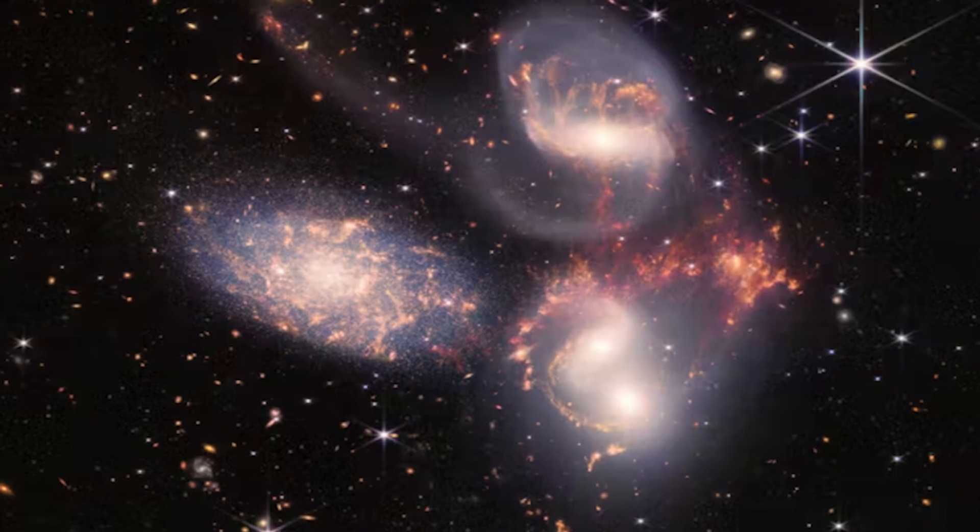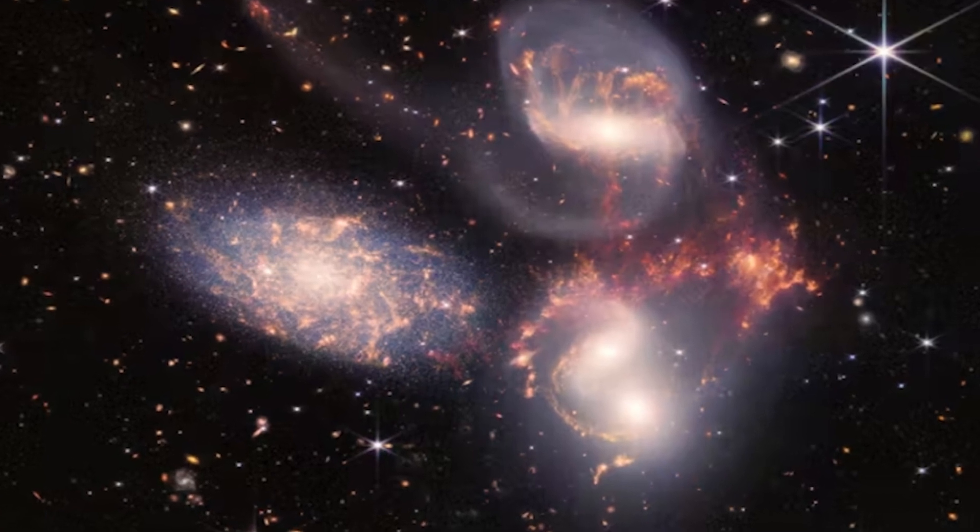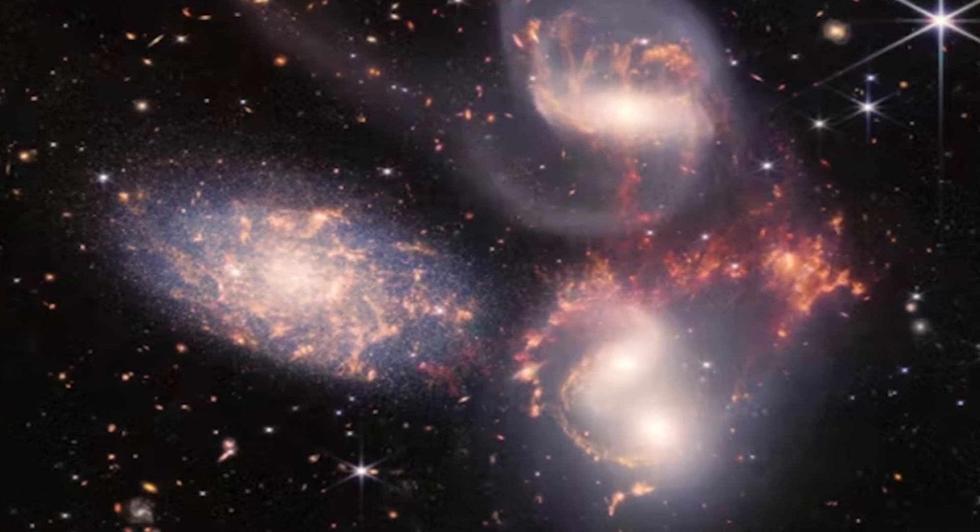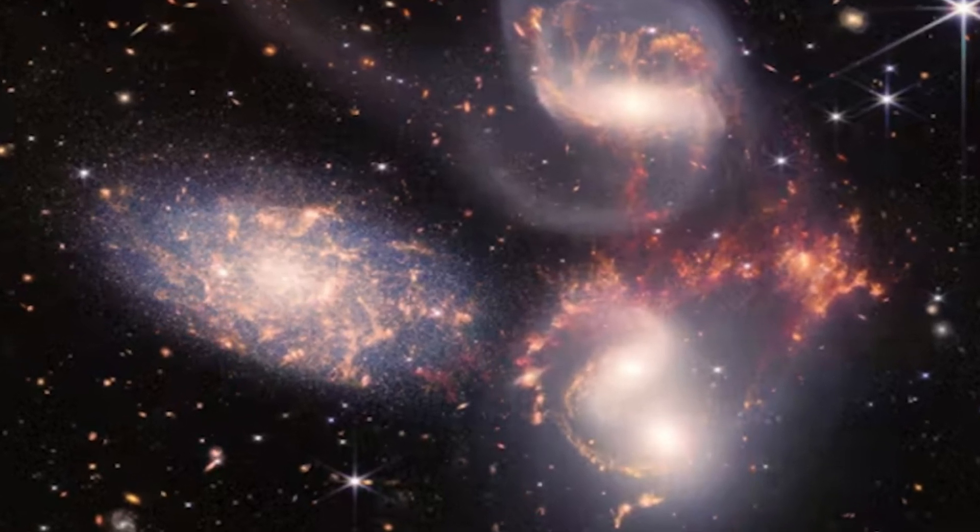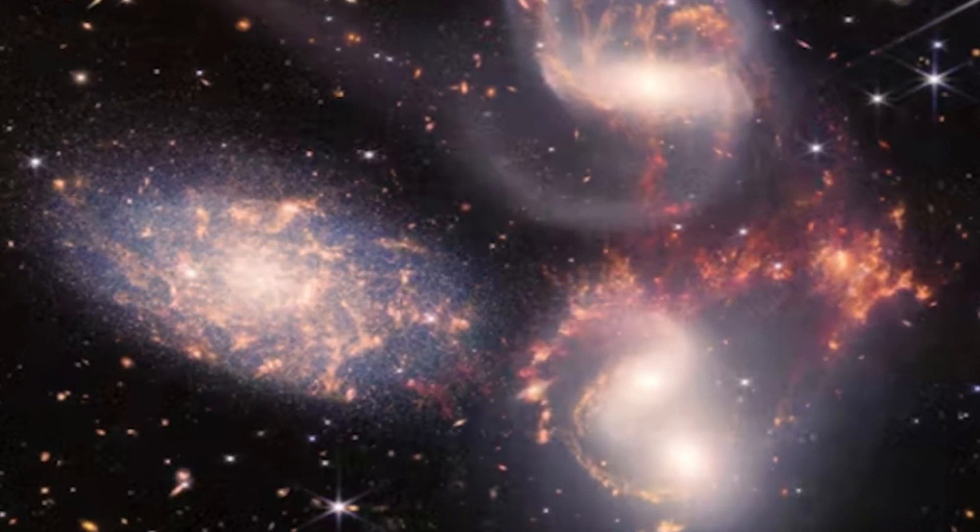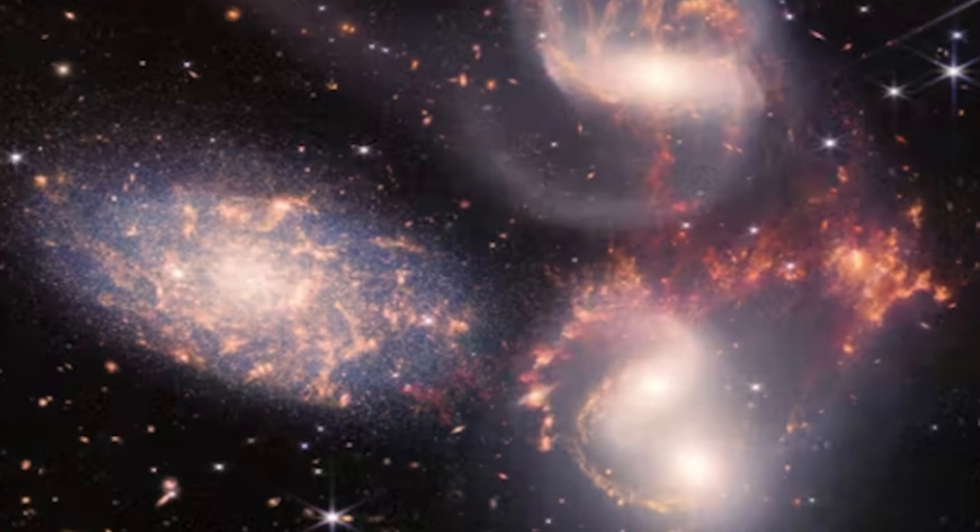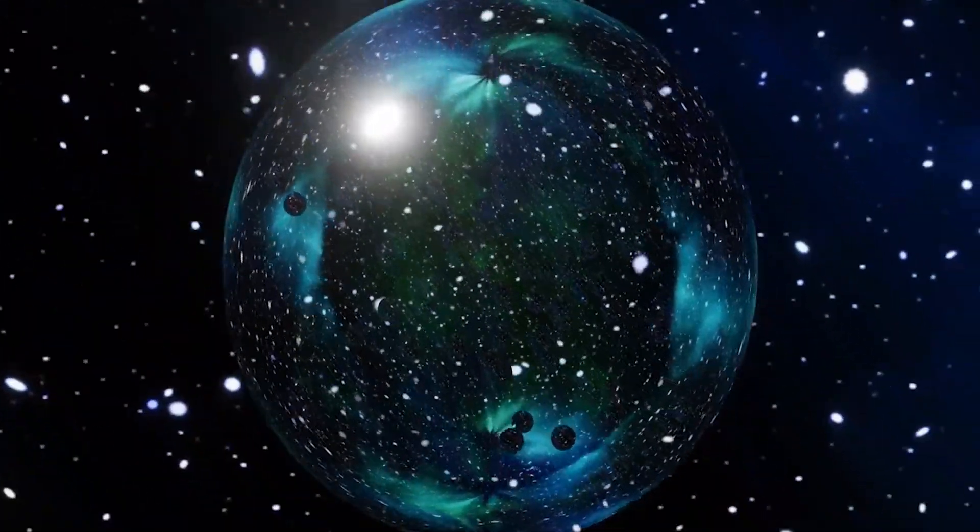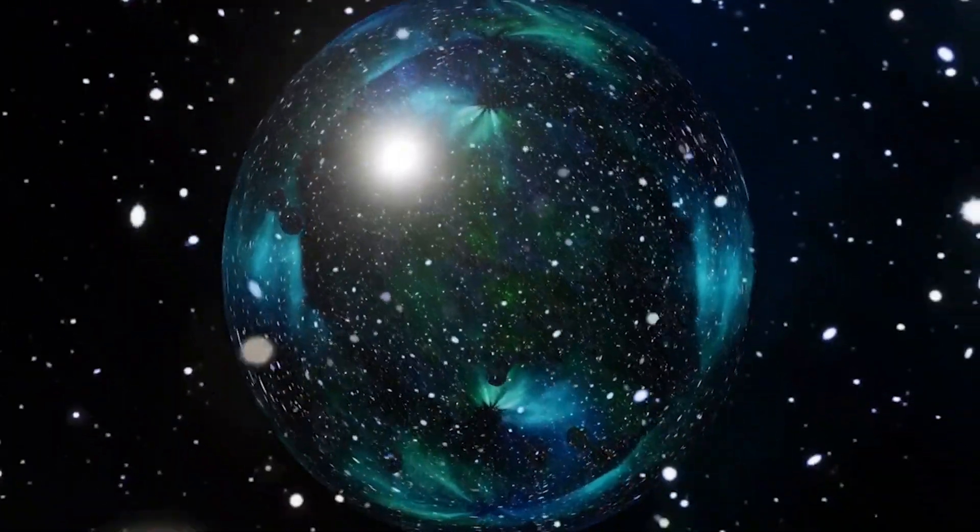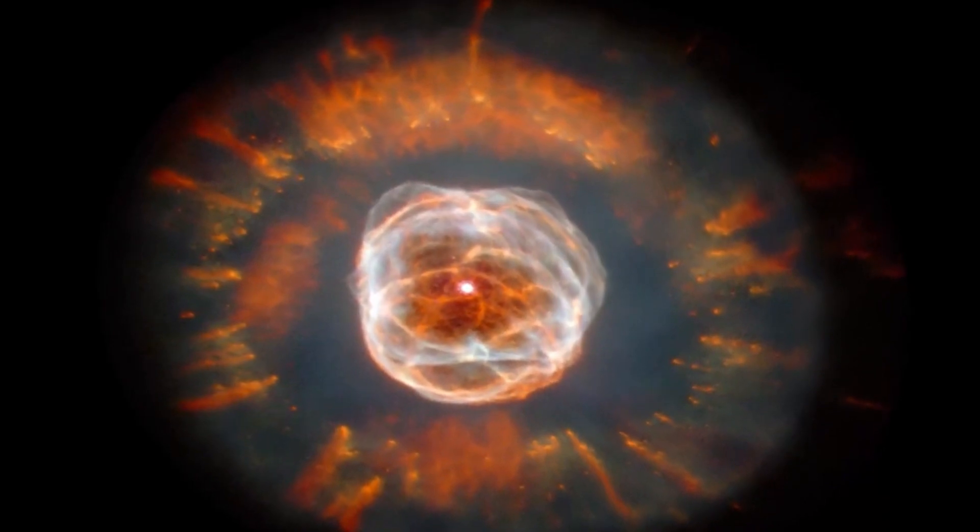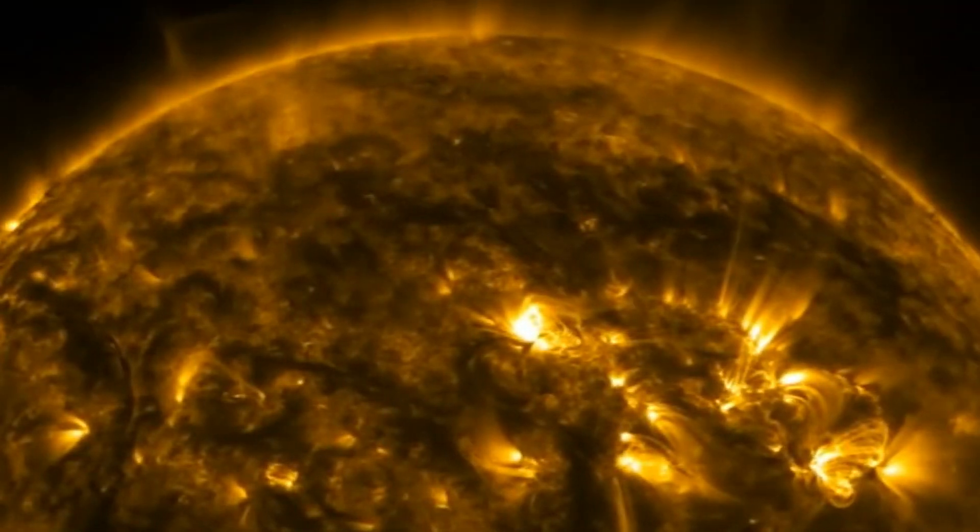Next image by Webb is Stephan's Quintet. It is a cluster of five galaxies located 290 million light-years away. As per official reports, four of these galaxies are closely attached to themselves, with NASA saying they are seemingly locked in a cosmic dance of repeated close encounters. Stephan's Quintet, or NGC 7319, was first discovered by French astronomer Édouard Stéphane in 1877.